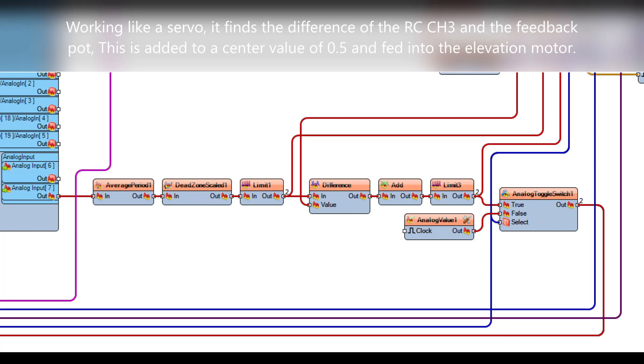Now using this feedback from the potentiometer just like a servo does, it's going to take the stick value from the RC transmitter and find the difference of where the potentiometer is actually sitting. It's going to add point five to that because if there is no difference it will be zero, which is actually point five on our zero to one scale. And then it limits that from zero to one so it does not lock the system up.